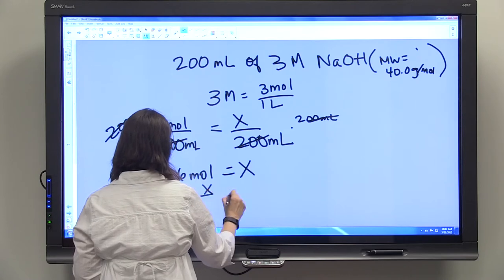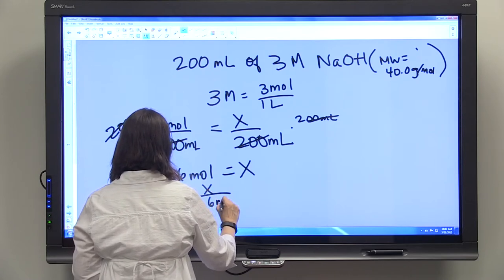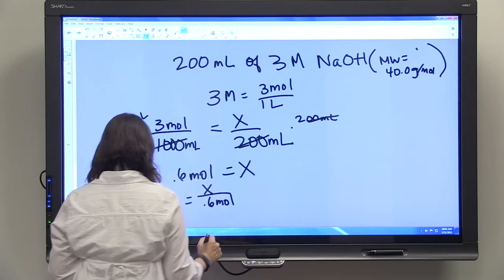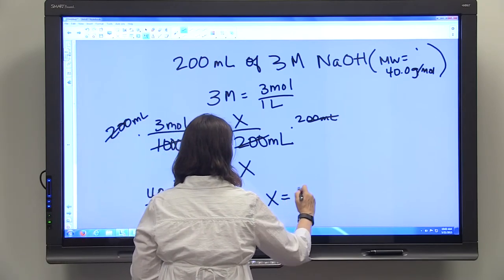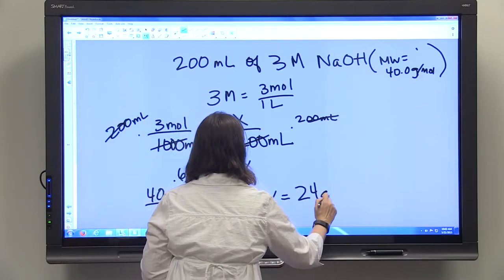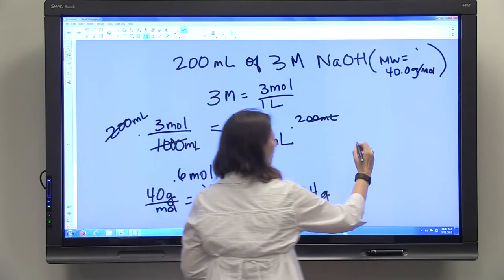...equals how many grams of 0.6 moles. So we can solve that for X, will get 24 grams. And so again here we're dissolving 24 grams...